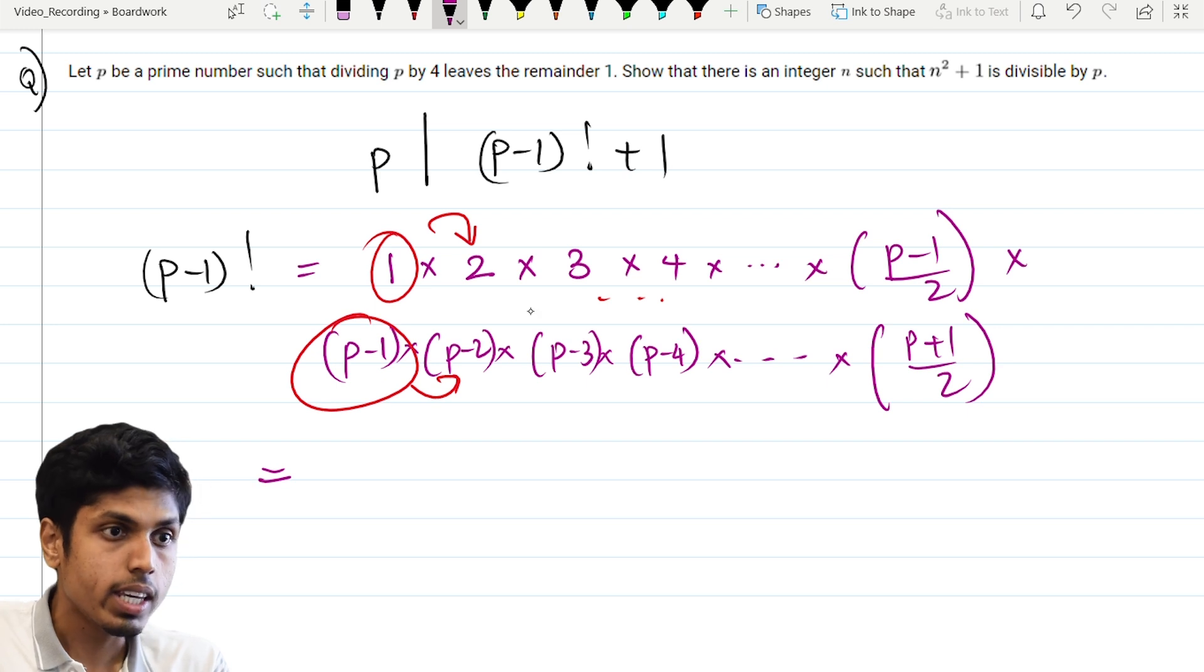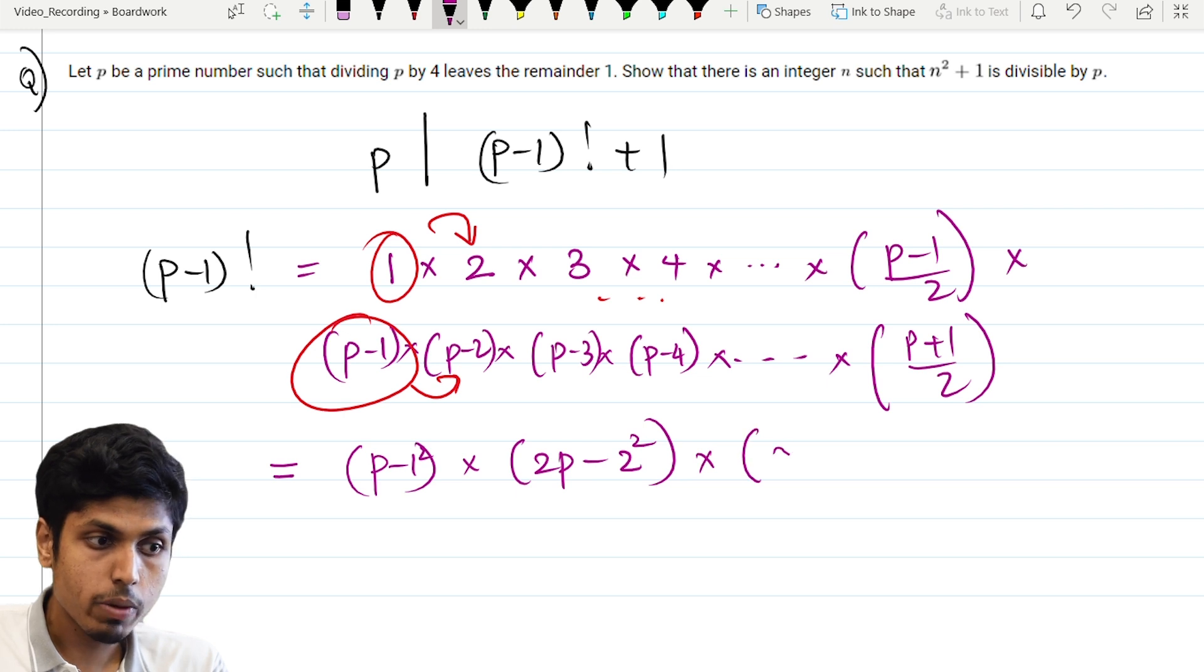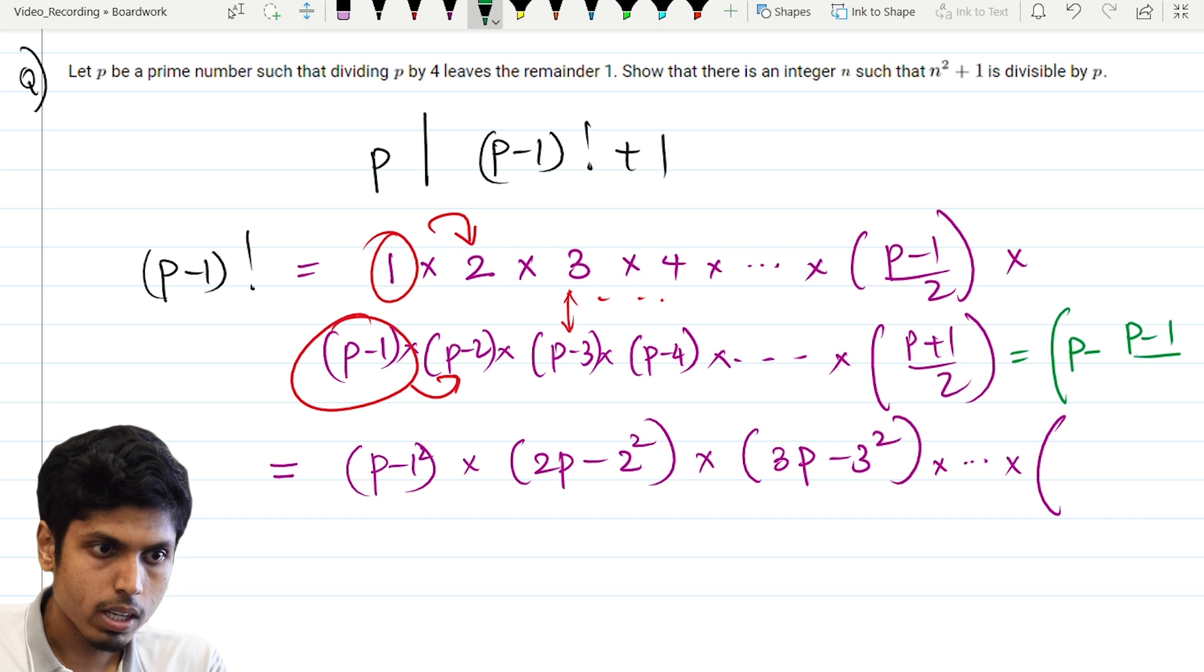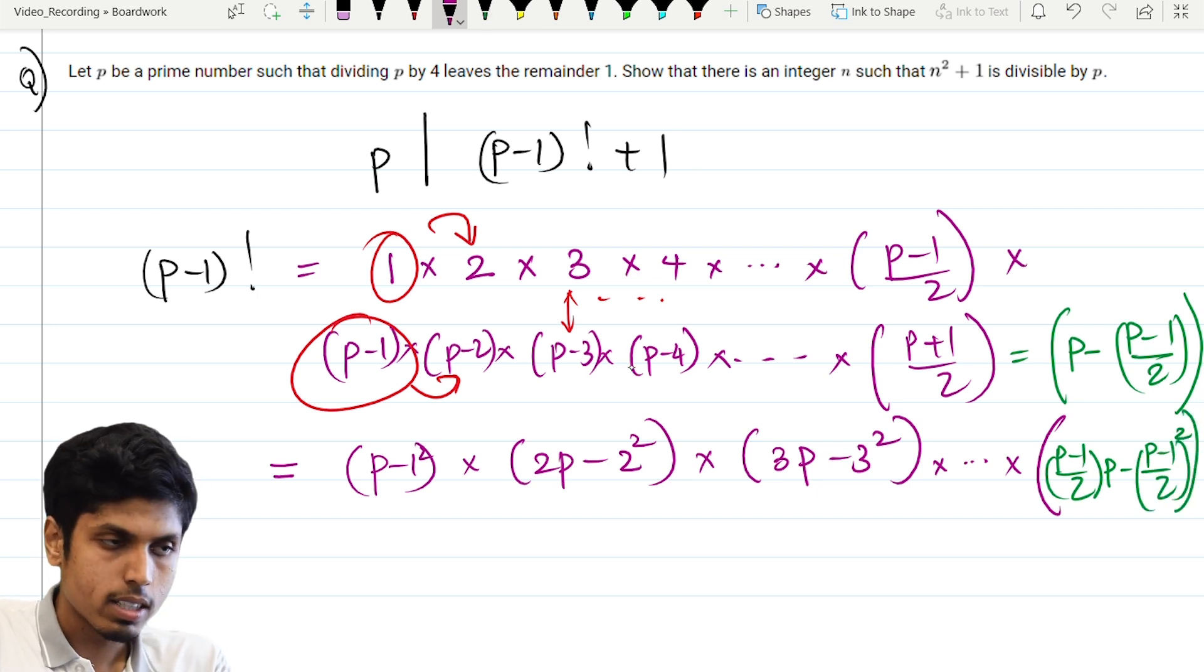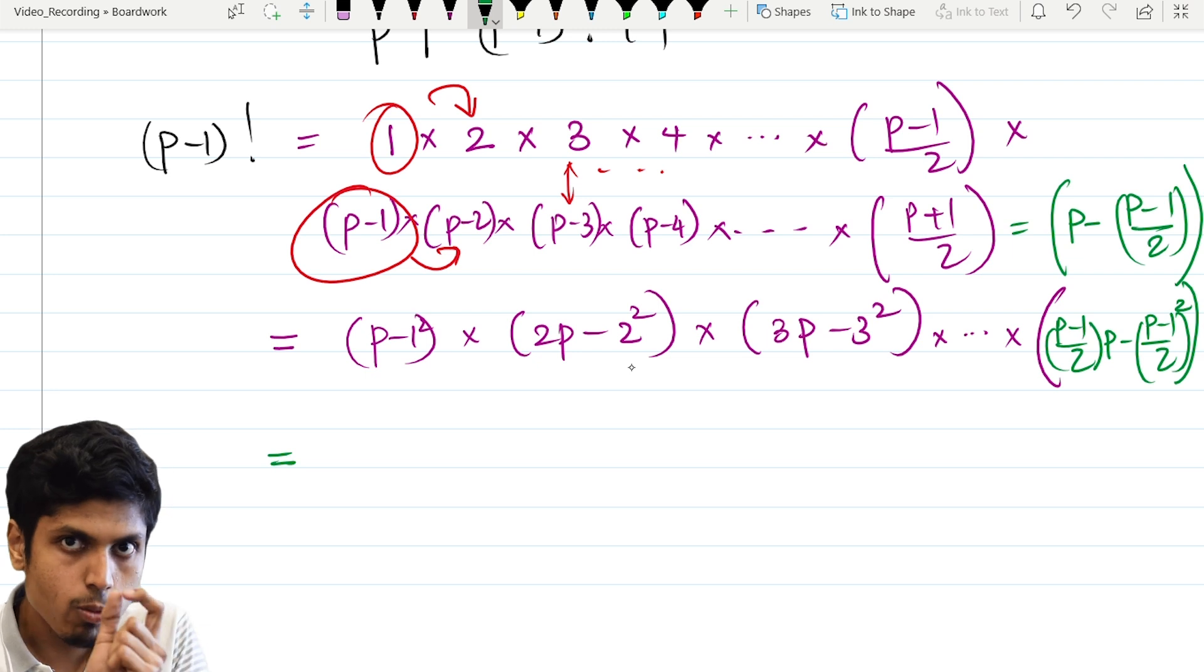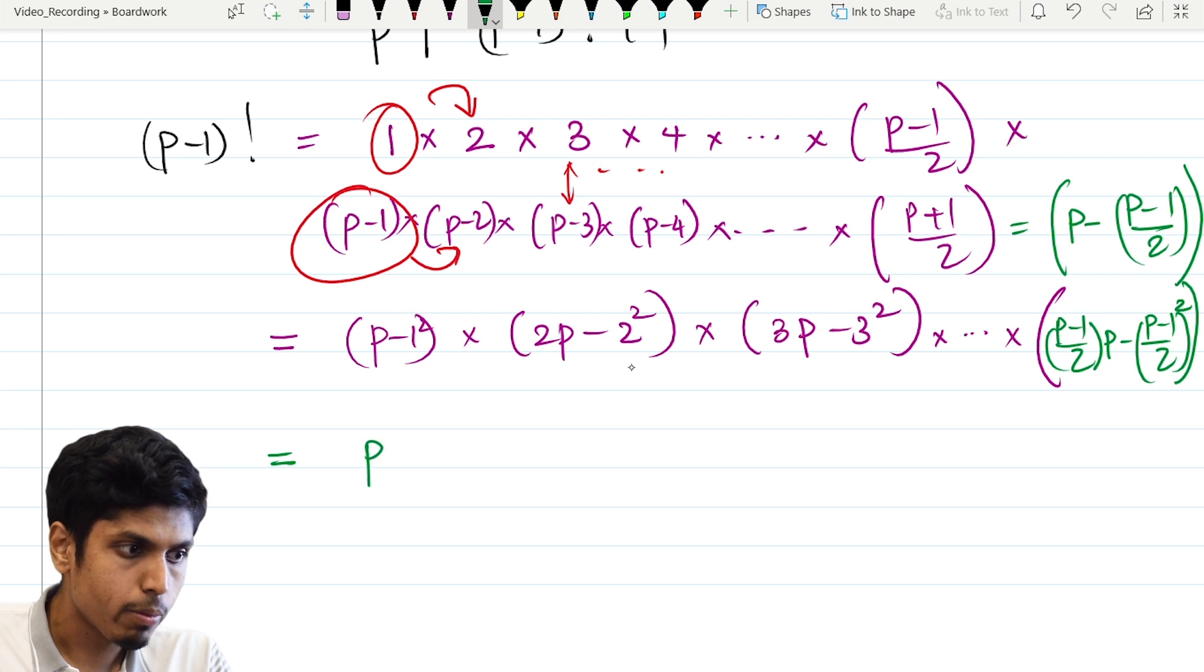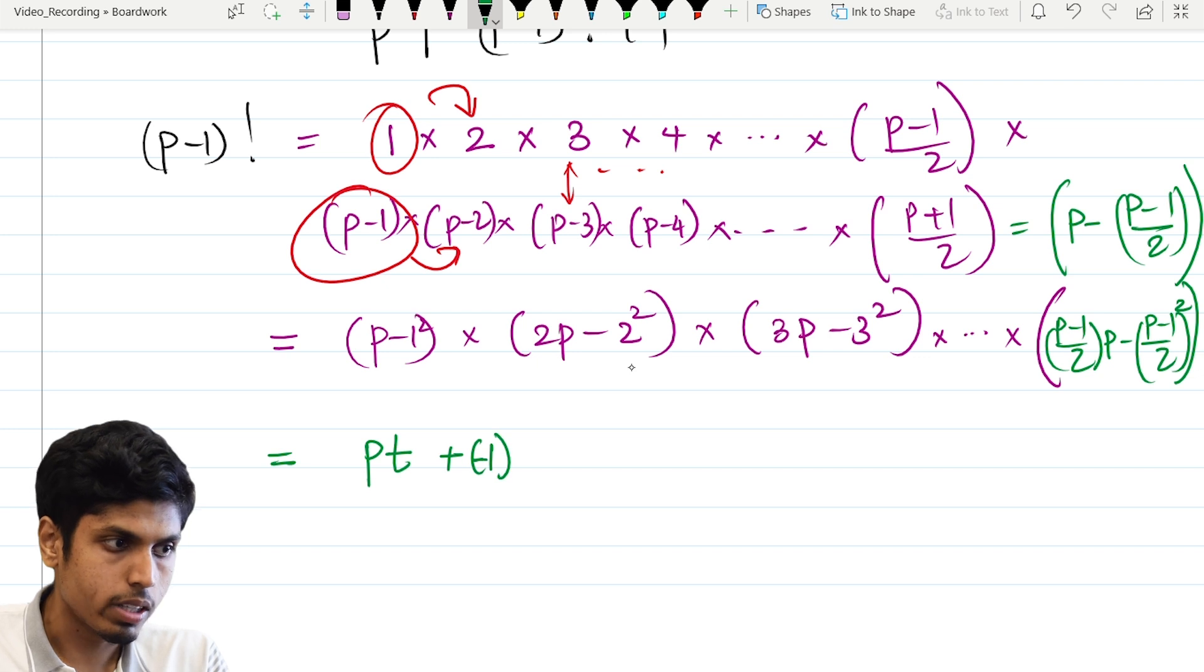Now, this is congruent, like equal to, p minus 1 times 2p minus 2 squared times 3p minus 3 squared. Remember, I am pairing up 3 and p minus 3 and multiplying them, and 4 and p minus 4. So on till, as well I can write p plus 1 in this form, p minus p minus 1 by 2 to get p minus 1 by 2 times p minus p minus 1 by 2 the whole square. Now, I know that if I expand this, all the numbers except one number will be clearly a multiple of p.